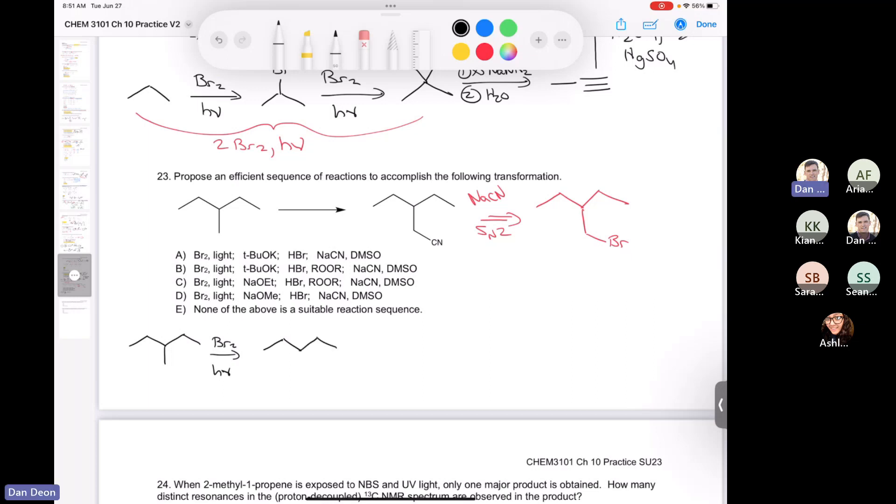But then we know that we could convert that to an alkene, namely the Hofmann alkene, using potassium t-butoxide. That would give us the Hofmann alkene. And the reason I wanted to make the Hofmann alkene is because if I do, I can do an anti-Markovnikov addition of HBr using peroxides to give me that primary alkyl bromide that I want.